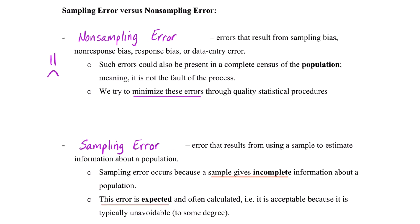This error is expected, and typically we calculate it. We call this as acceptable because it's typically unavoidable to some degree. The idea here is we know we're ready for it. We know this can happen. It is different than non-sampling error where we are trying to minimize these errors through our quality procedures. And that wraps up our discussion on bias and sampling.